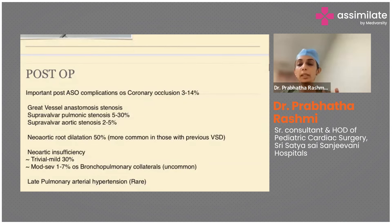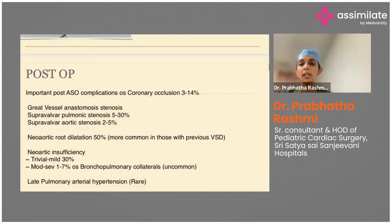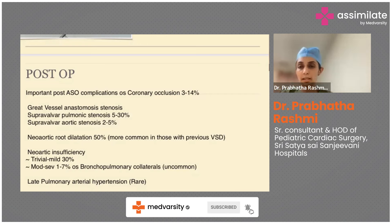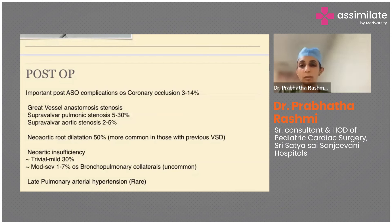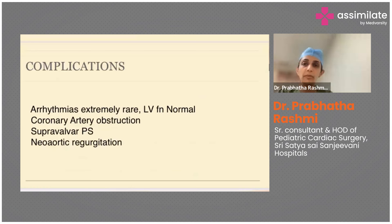Over time, especially when there is a large VSD, the pulmonary artery root — now the neo-aortic root — may dilate, leading to neo-aortic regurgitation. This is seen frequently with VSDs; it is generally trivial to mild and manageable with medications, but rarely can become severe. Arrhythmias are rare if LV function is normal and coronaries are unobstructed. Supravalvar pulmonary stenosis and neo-aortic regurgitation are the main long-term concerns.